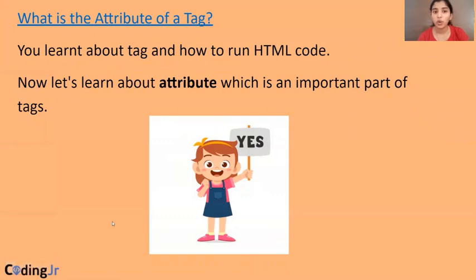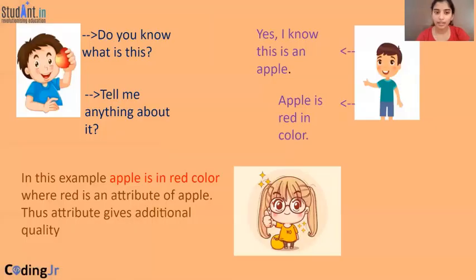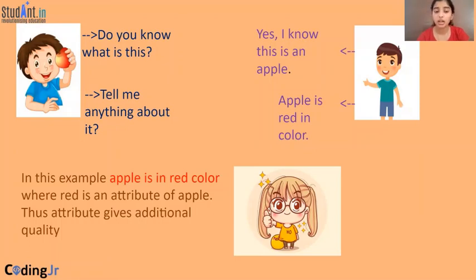Now we are going to look into attributes of a tag. Let us see what an attribute is and why it is so important. Attribute means quality. See, what is this fruit this boy is holding? It is an apple, right? Can you tell me any quality of an apple? Apple is red in color and it is rich with vitamins, fibers, et cetera. These are the attributes of an apple.